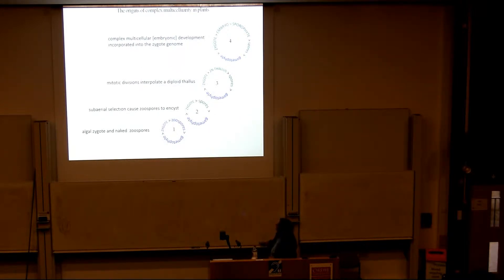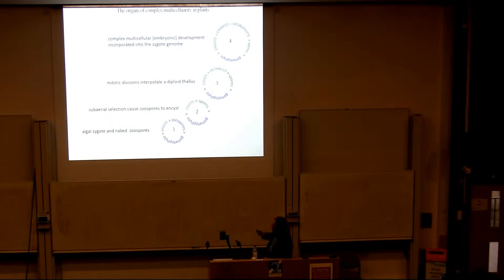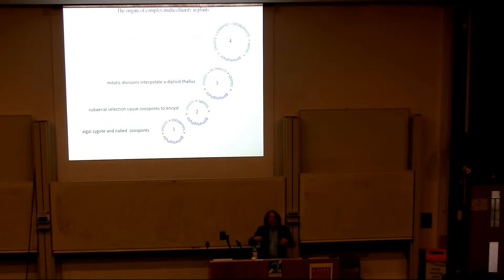Here's a diagram putting that out diagrammatically. We start out with some kind of an algal zygote that produces naked zoospores. Sub-aerial selection causes the zoospores to persist and form spores. Mitotic divisions interpolate a diploid thallus, so we have an intercalation of this new organism that evolves after the spores themselves evolve. The part we really have no idea about is how that evolved thallus became incorporated into the genome of the evolving lineage in such a way that it becomes incorporated into an embryo.